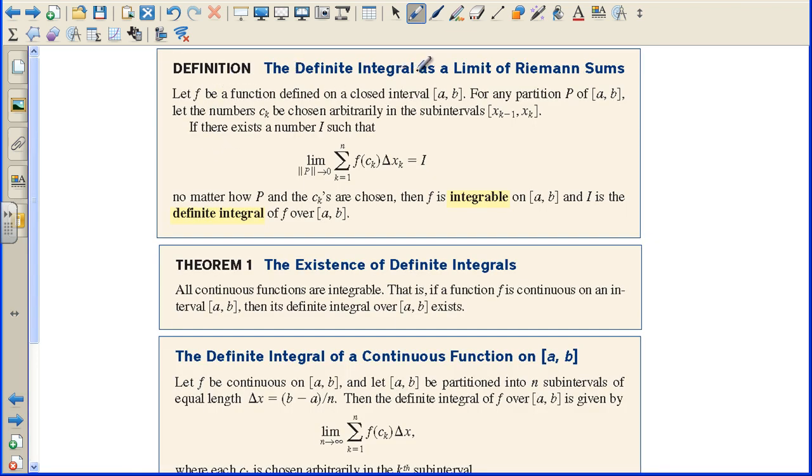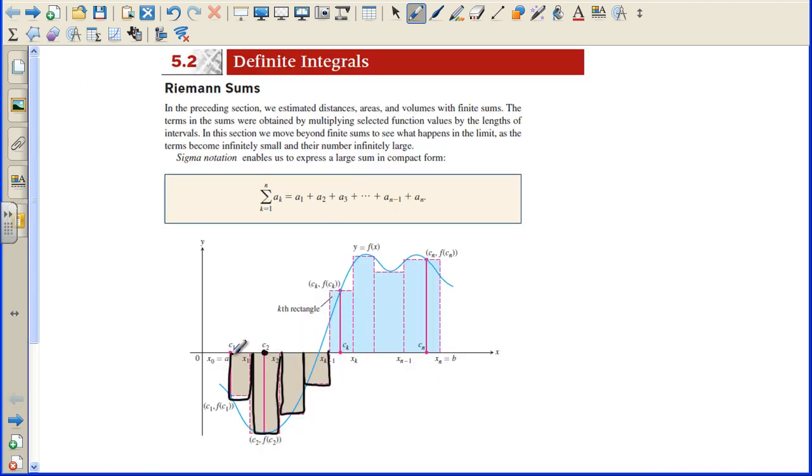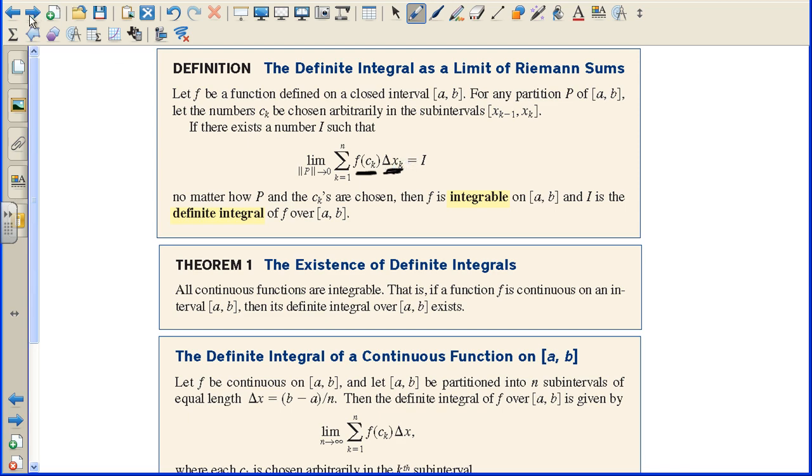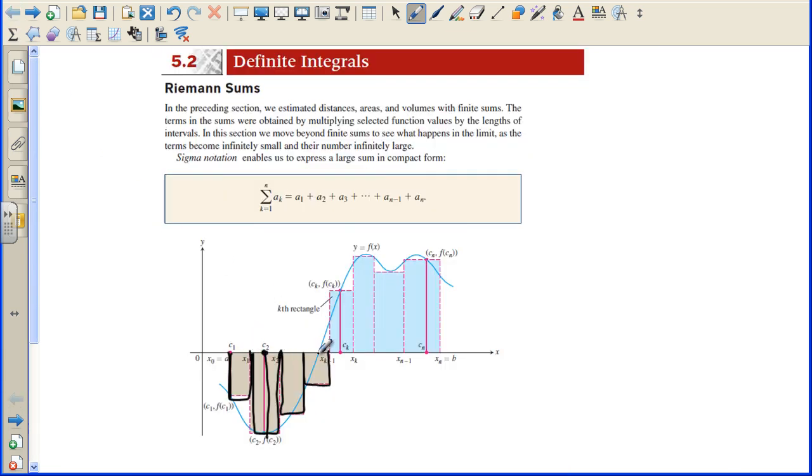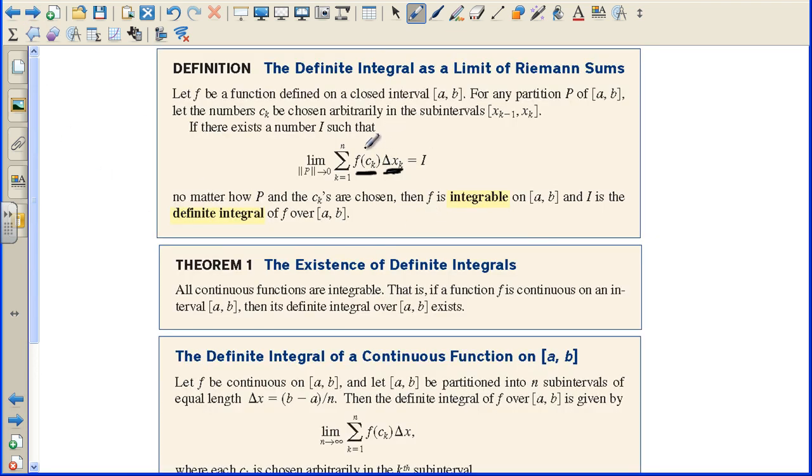We have the definition, the definite integral as a limit of Riemann sums. Let f be a function defined on a closed interval A to B. For any partition P of A to B, let the number C sub K be chosen arbitrarily in the sub-interval X sub K minus 1 to X sub K. If there exists a number I such that the limit as the biggest partition, the biggest rectangle, the biggest width is going to zero, then the sum of all of the rectangles, this would be the height. All these C sub values are the height of the rectangles. This is the height times the width, the change in X.